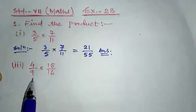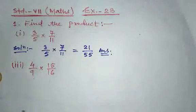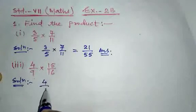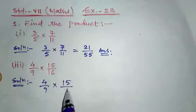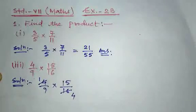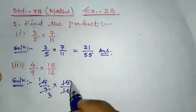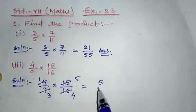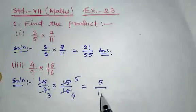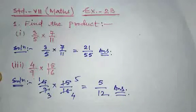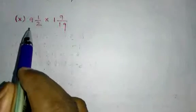Question number 3: find the product of 4/9 and 15/16. Solution: 4/9 into 15/16. Here you can cancel — 4 ones are 4, fours are 16; 3 threes are 9, 3 fives are 15. So the product of 5 and 1 is 5, and the product of 3 and 4 is 12. The answer is 5/12.